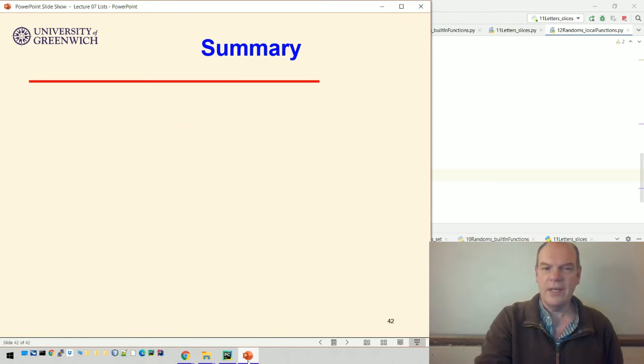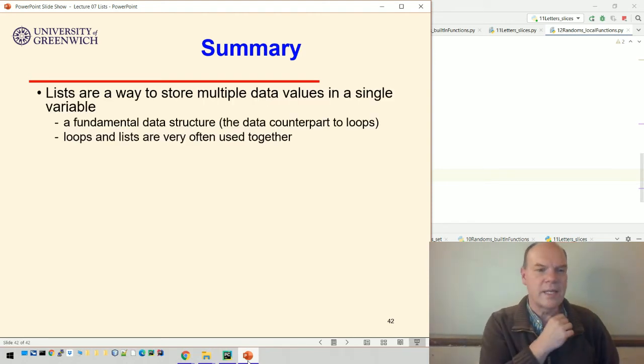So we've seen how to do those local versions of those functions to see how they work. So just to summarize the lecture then, lists are a really common way of storing multiple data by using a single variable. So we have one variable with the name of the list like fruits or randoms, and then it stores lots and lots of values. It's very fundamental and it's the data counterpart to loops. So loops loop over a bunch of things and often the things that are looping over are the items in the list. So loops and lists are very often used together.